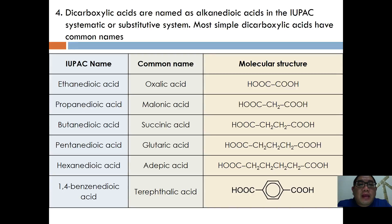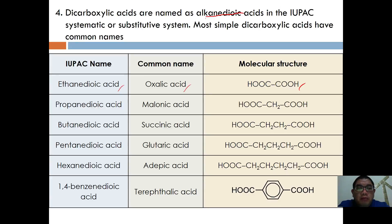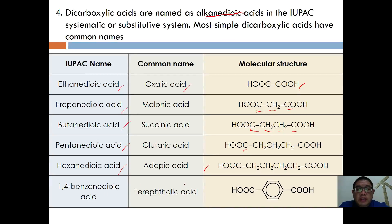Dicarboxylic acids are also known as alkanedioic acids in the IUPAC substitutive system. Most simple dicarboxylic acids have common names. For example, ethanedioic acid is also known as oxalic acid with the structure COOH–COOH. Propanedioic acid has 3 carbons, butanedioic acid has 4 carbons, pentanedioic acid has 5, hexanedioic acid has 6, and 1,4-benzenedioic acid is also known as terephthalic acid.